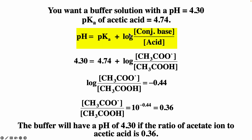Starting with Henderson-Hasselbalch: pH = 4.3, pKa = 4.74, so 4.3 = 4.74 + log(base/acid). Subtracting 4.74 from both sides gives −0.44. Taking everything to the power of 10 gives base/acid = 10⁻⁰·⁴⁴ = 0.36. So as long as the ratio of conjugate base to acid is 0.36, the pH should be 4.3. It's the ratio that matters, not the absolute quantities.